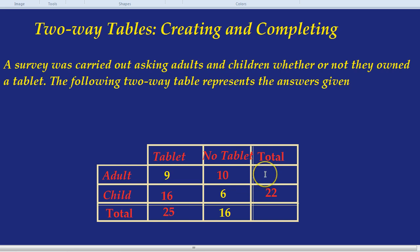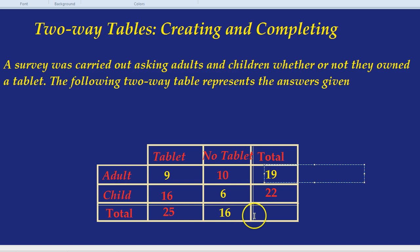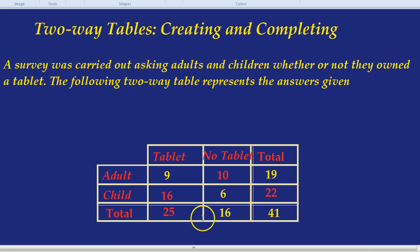We can now fill out this row. So if there was 9 adults who had a tablet, 10 adults who did not have a tablet, how many adults in total? That would be 19. And finally, the last box is the total of all the people in the survey. 19 adults plus 22 children is 41. And we can double-check that's correct. Because if you notice, 25 people had a tablet. And 16 people did not have a tablet. And if you add those two together, that's 41 as well. So we have completed our two-way table.